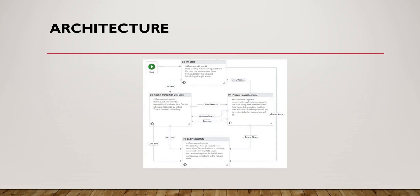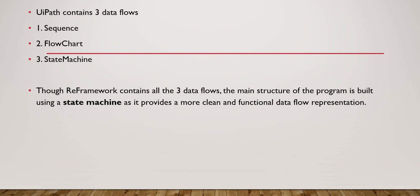In the coming videos, we will see the workflow components in depth, like what components are involved in the Init State. UiPath contains three data flows: Sequence, which is for simpler linear data flow activities; Flowchart, which is for more complex, two-dimensional data flows and can be reused in other projects; and State Machine, which is an event-driven workflow. The RE Framework uses all three, but the main structure is built using the State Machine because it provides a cleaner and more functional data flow representation.